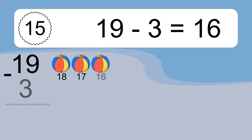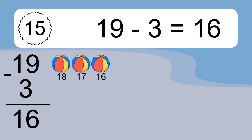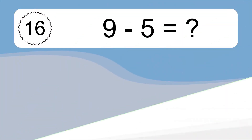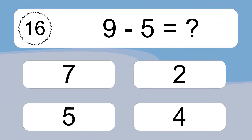19 minus 3 equals what? 19 minus 3 equals 16. Let's count it: 18, 17, 16.